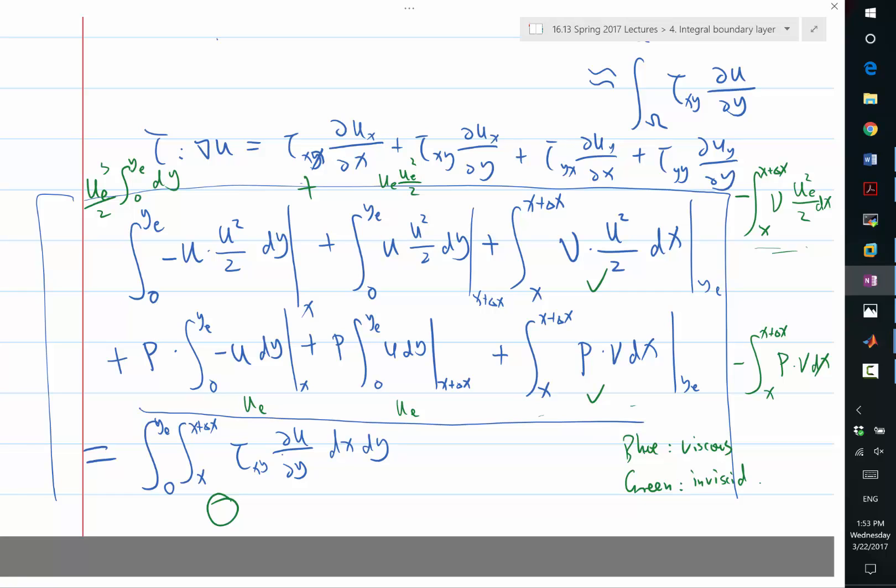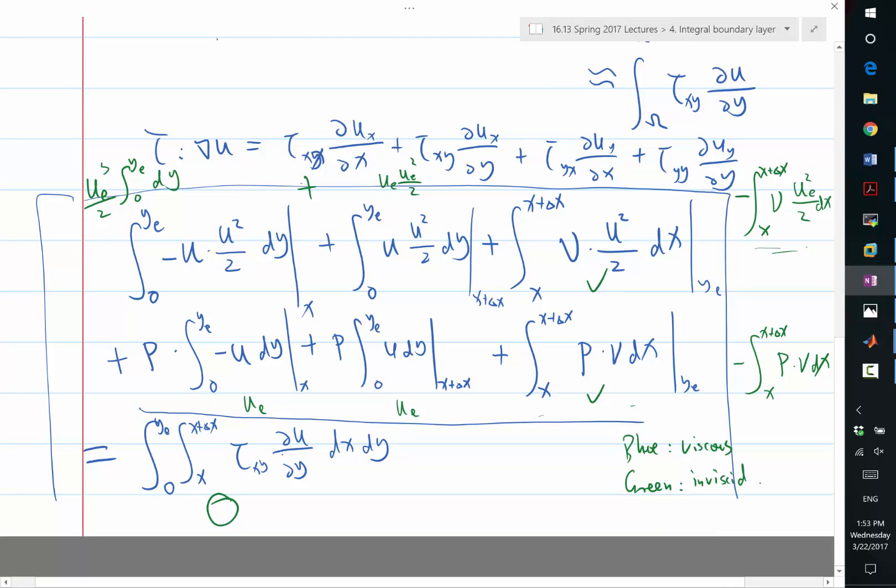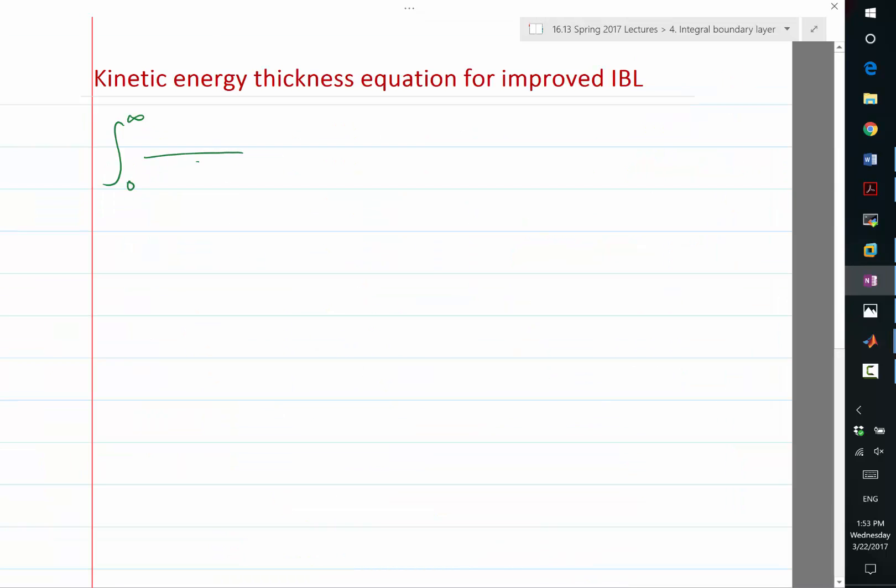Now, let's subtract blue from green to see what we get. First of all, instead of integrating to ye, I'm going to integrate to infinity. Because now, after the subtraction, the equation should not be sensitive to any particular ye. Doing the subtraction, what I get is half of ue cubed minus u cubed dy, with a minus sign at x and the same term at x plus delta x.